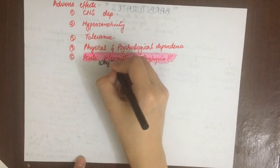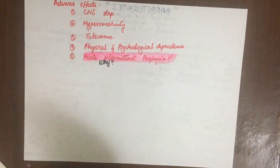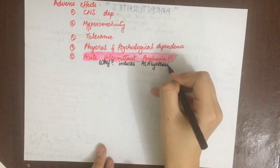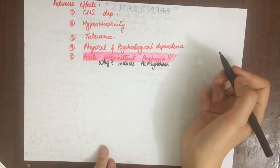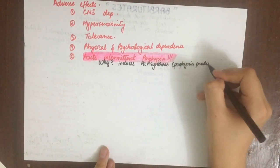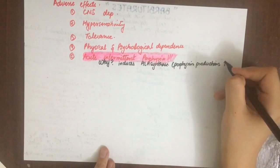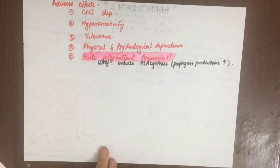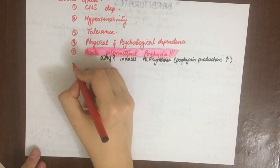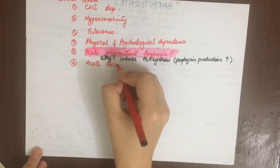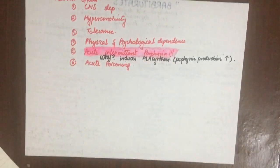One adverse effect to remember is acute intermittent porphyria. This occurs because in porphyrin synthesis, the chief enzyme is ALA synthase, and barbiturates induce that enzyme as well. This increases porphyrins in the body, causing porphyria.